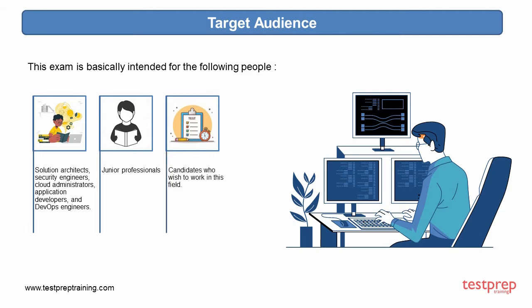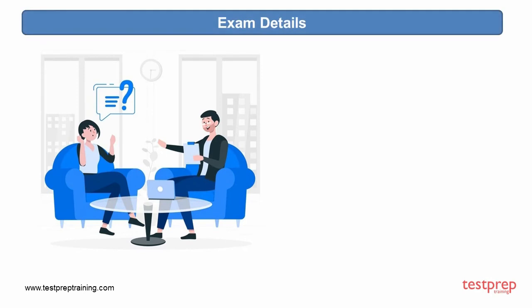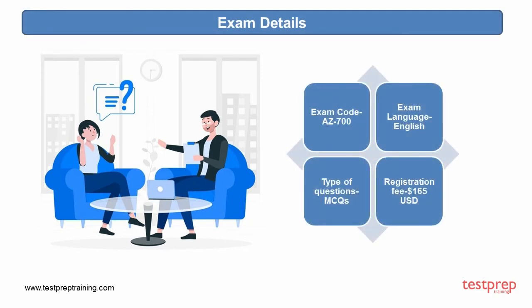Exam details: The exam code is AZ-700. The exam language is English. The type of questions will be MCQs. The registration fee is $165 US.